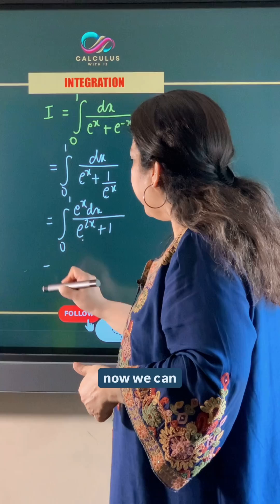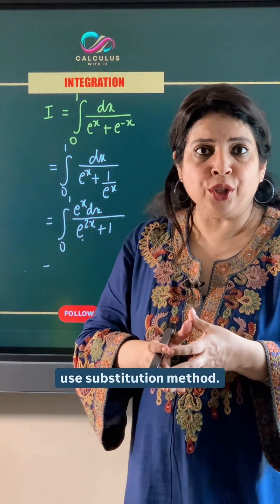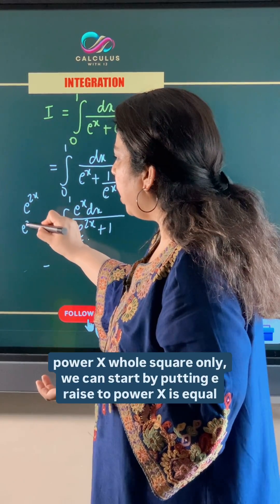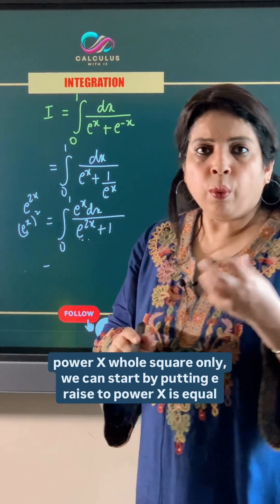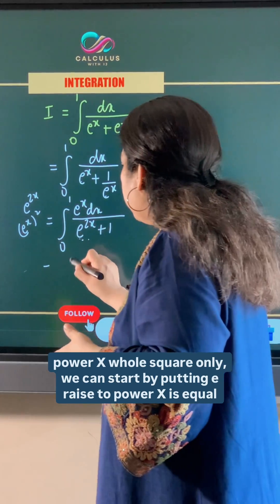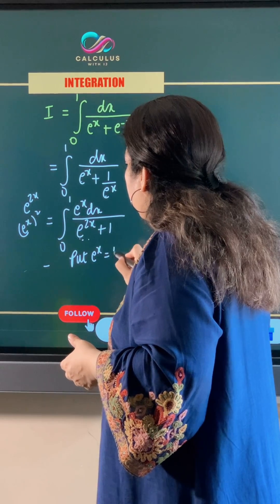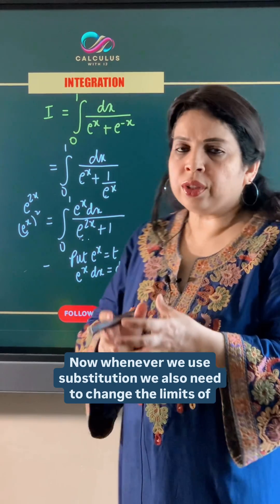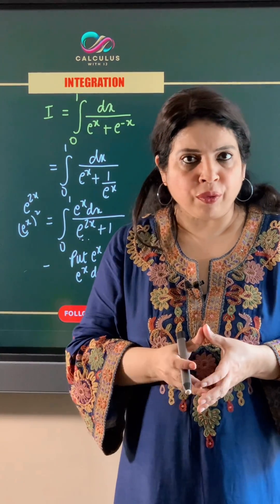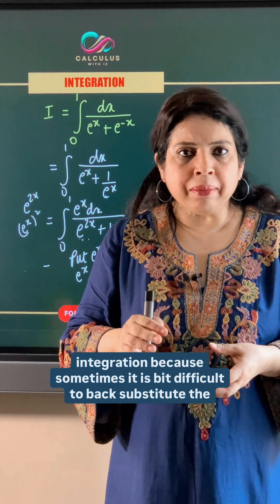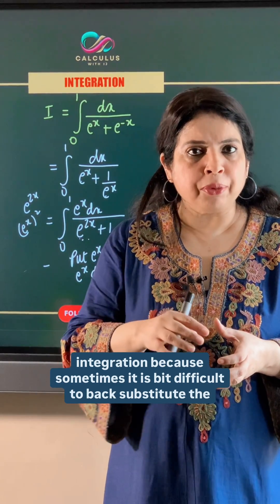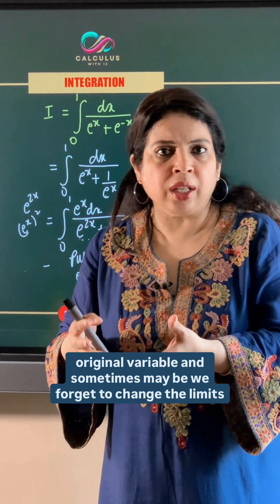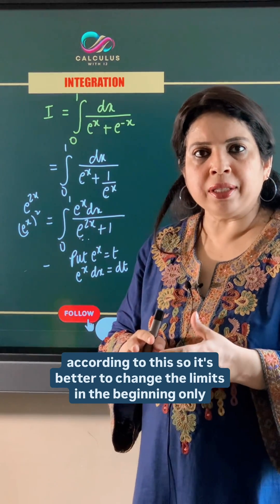So now we can use the substitution method. Since e raised to power 2x means e raised to power x whole squared, we start by putting e raised to power x equal to t. So its derivative gives us e^x dx equal to dt. Whenever we use substitution, we also need to change the limits of integration, because it can be difficult to back-substitute the original variable, so it is better to change the limits at the beginning.